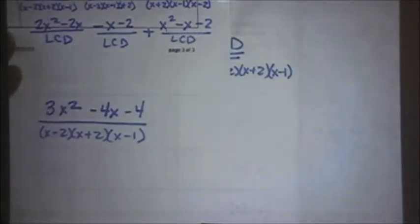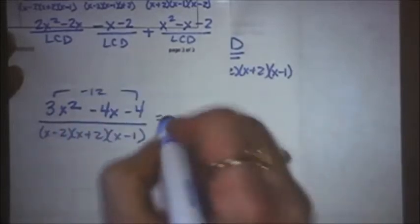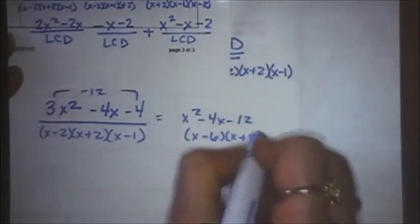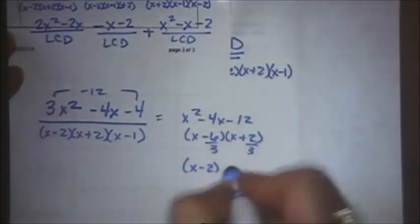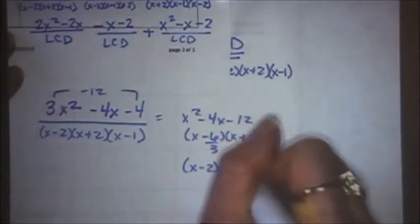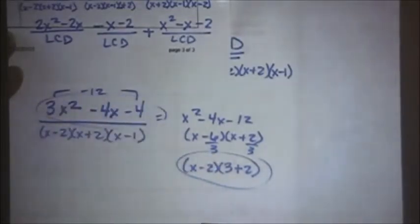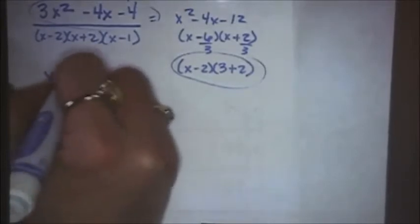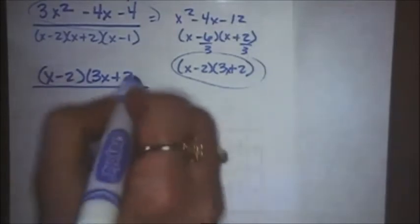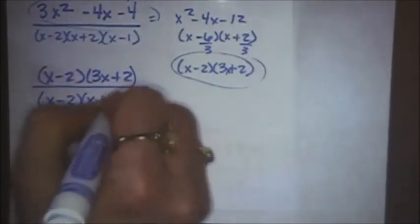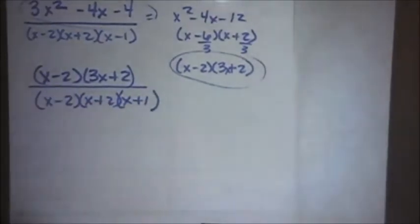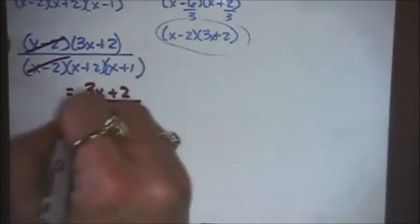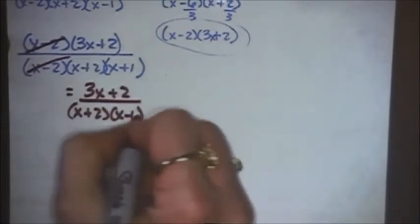Now I want to check and see if this will factor — I think it will. Using the bottoms up method, I get x squared minus 4x minus 12, which factors as x minus 6, x plus 2. That brings back the 3, giving me x minus 2 times 3x plus 2 over my LCD of x minus 2, x plus 2, x minus 1. The x minus 2 factors cancel, giving me 3x plus 2 over x plus 2, x minus 1.